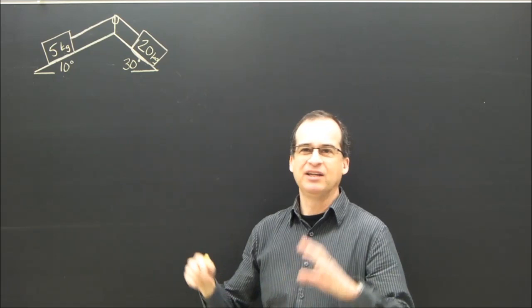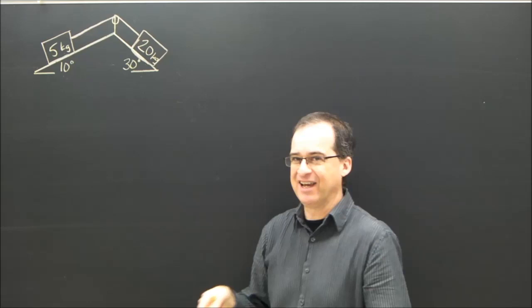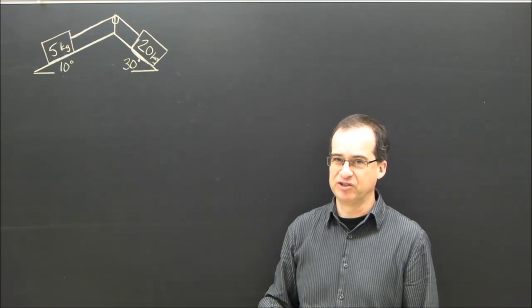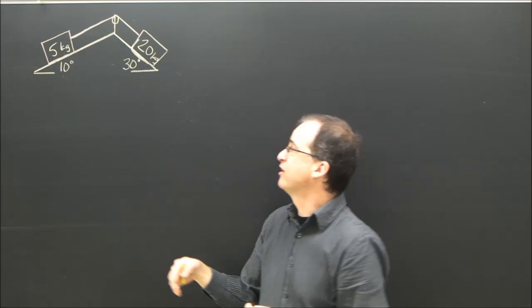And our plan is the same as we always do. Draw a free body diagram for the 5 kg, find the equation in the x direction, which is the direction of acceleration, and in that equation is the answer. I'm going to draw a free body diagram for the 20, and I'm going to come up with its x equation, which is the direction of acceleration. And again, the answer is in that equation.